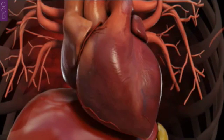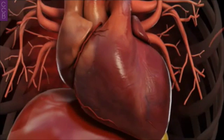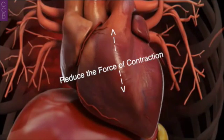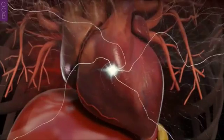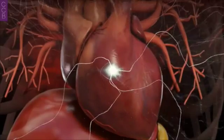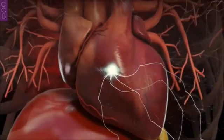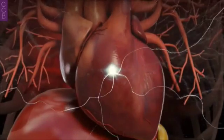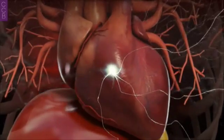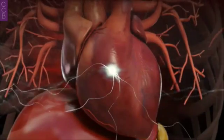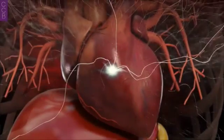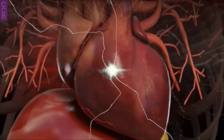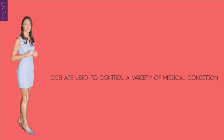Calcium channel blockers also have a negative inotropic effect — by acting on cardiac muscle, they reduce the force of contraction in the heart. They also have a negative chronotropic effect by slowing down the electrical activity within the heart, which may affect the heartbeat. Additionally, they exhibit a negative dromotropic effect by slowing the conduction velocity, particularly at the atrioventricular node, which can ultimately slow the heart rate.